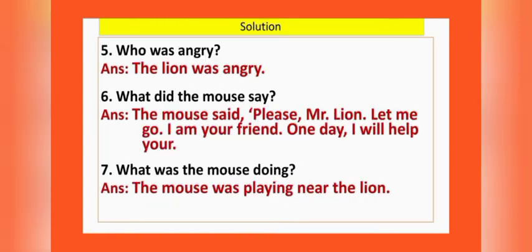Number five: Who was angry? The lion was angry. Number six: What did the mouse say? The mouse said, 'Please, Mr. Lion, let me go. I am your friend. One day I will help you.' Number seven: What was the mouse doing? The mouse was playing near the lion.